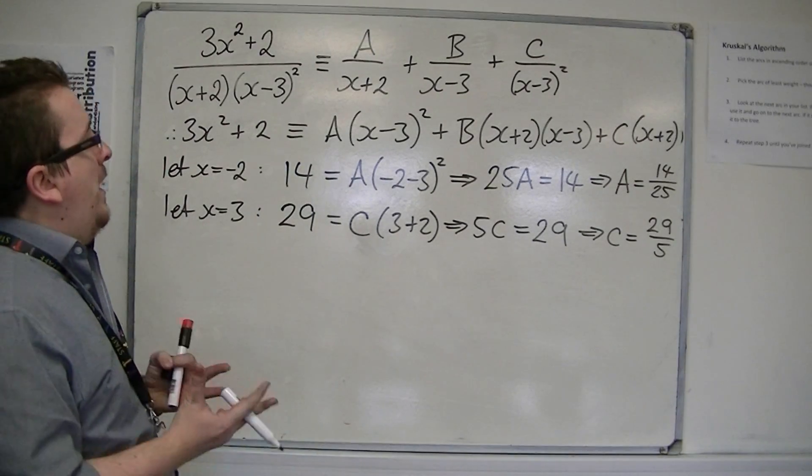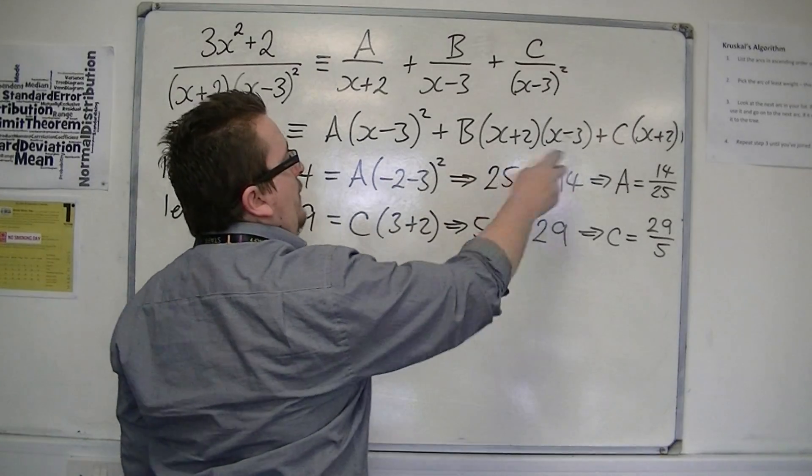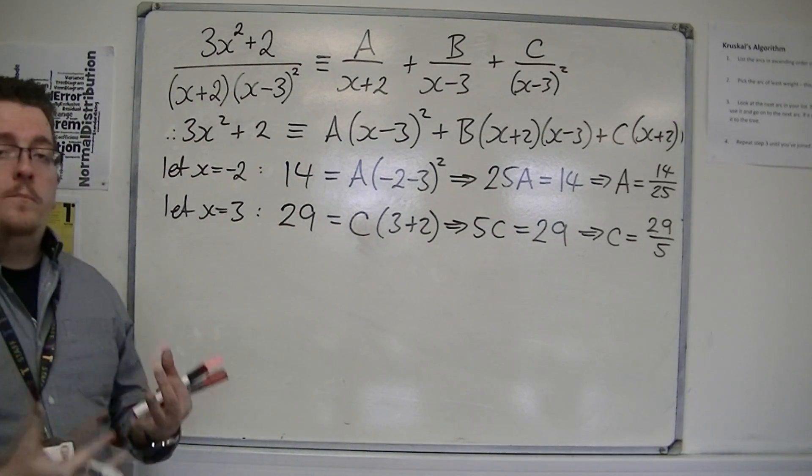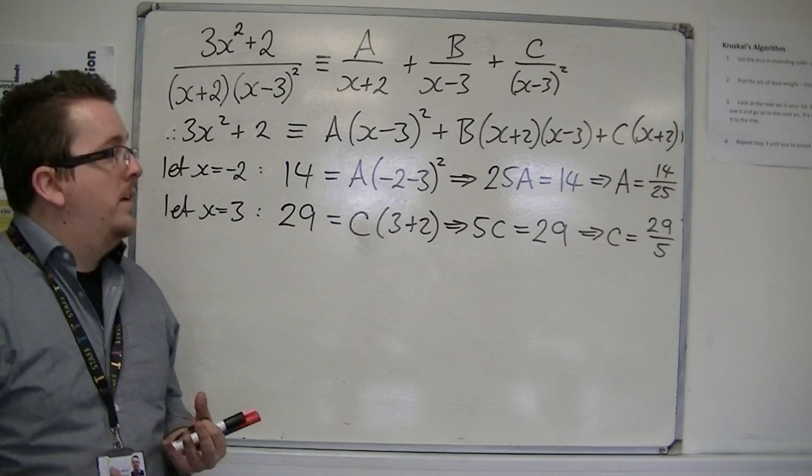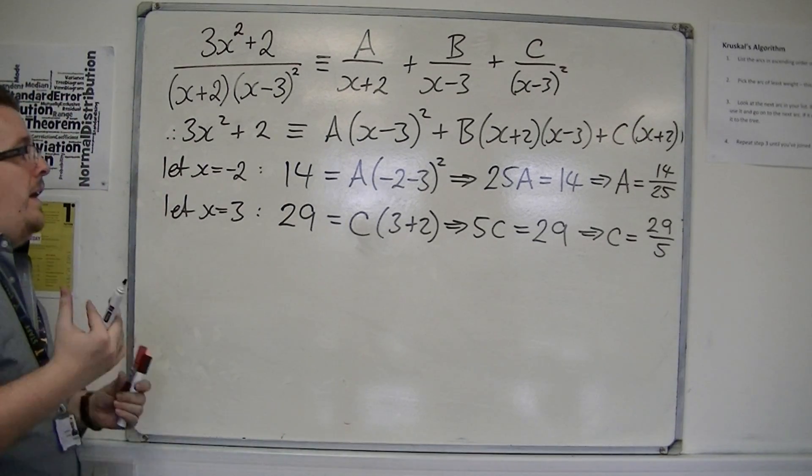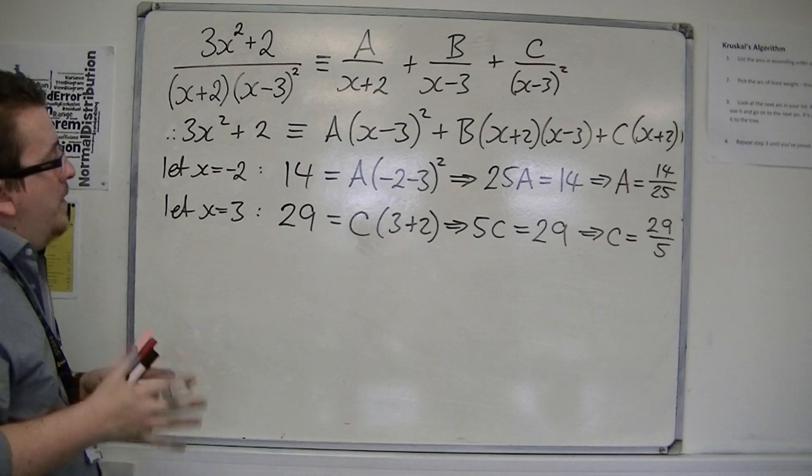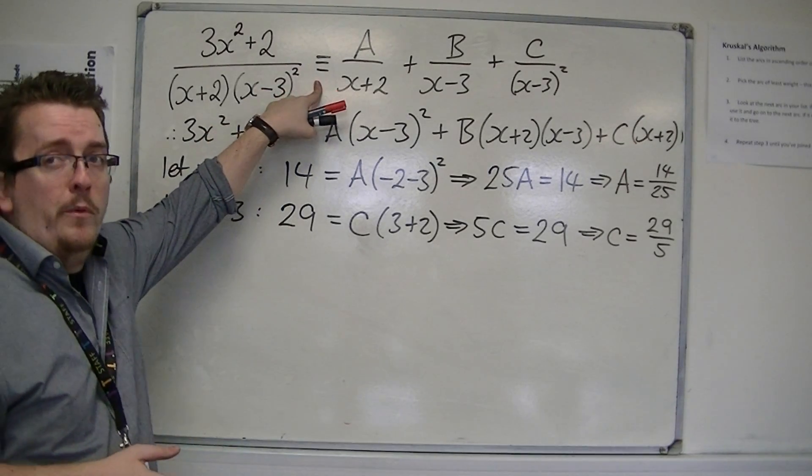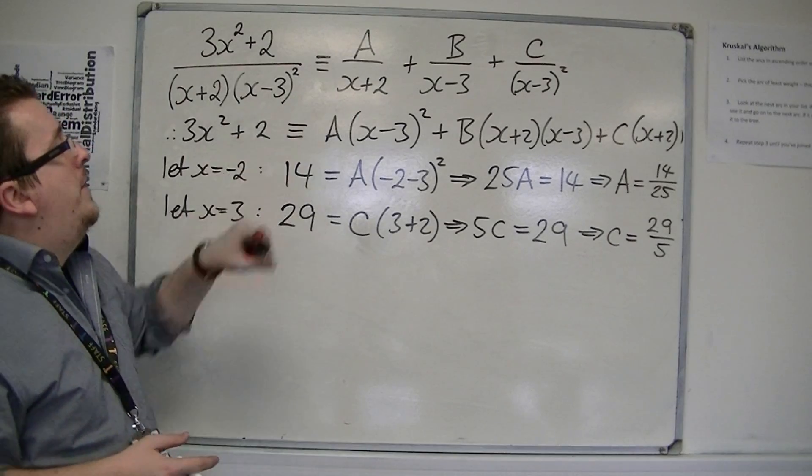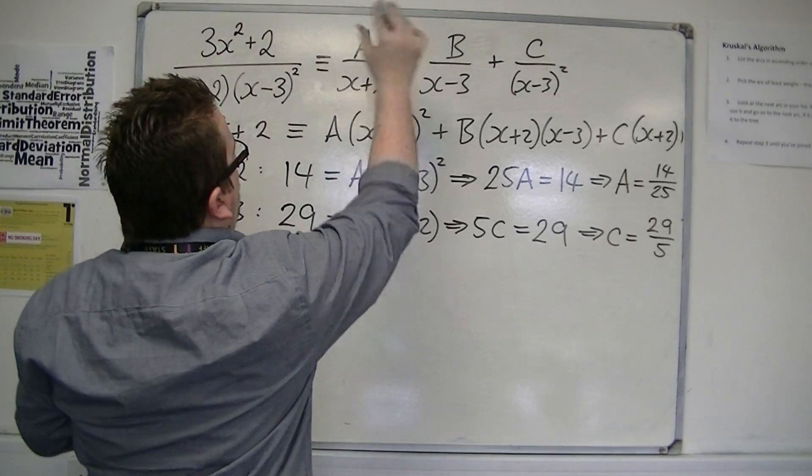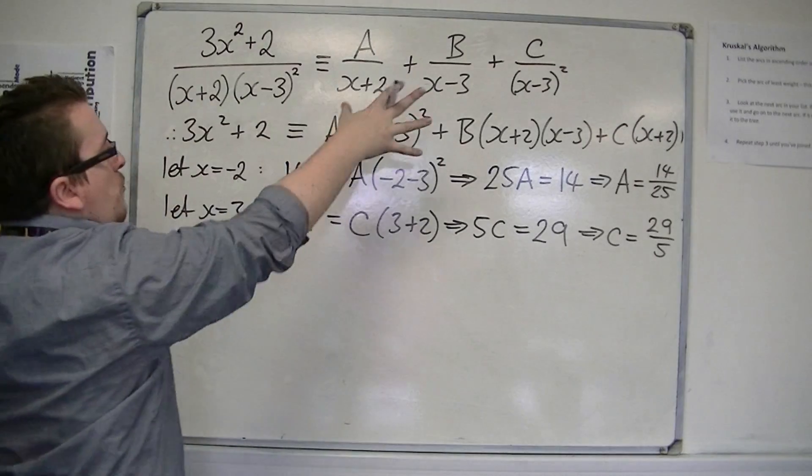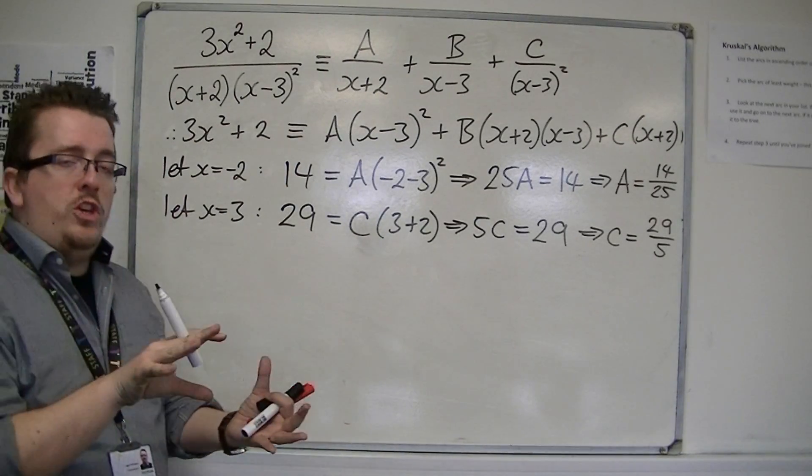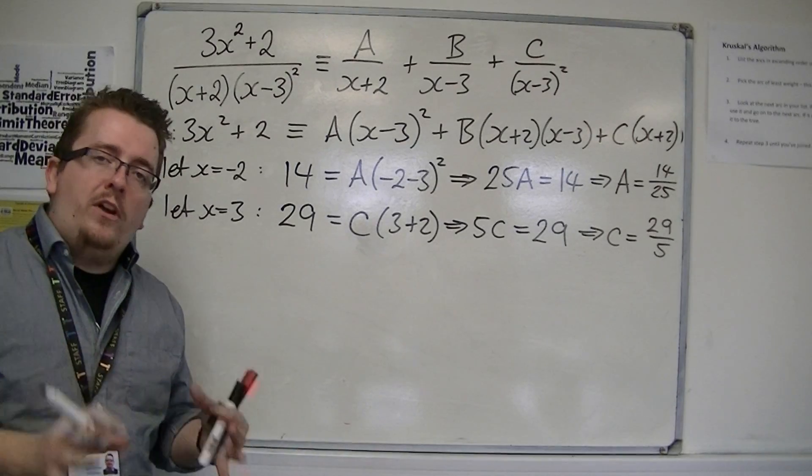Now, I've used up possible values of x that are going to cancel out the brackets, but I still have B to find. Now, that causes a little bit of a problem. However, because I am working with an equivalency symbol here, that means that this side is always equal to this side for all values of x. And because it's equivalent, I can choose whichever value of x I like.